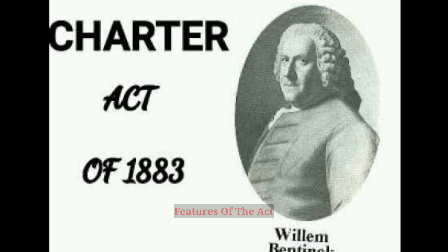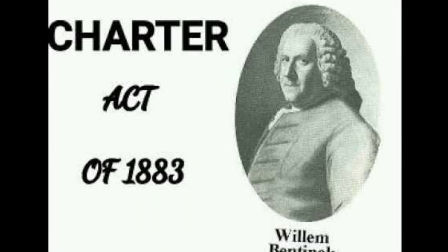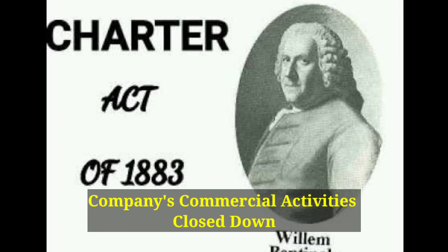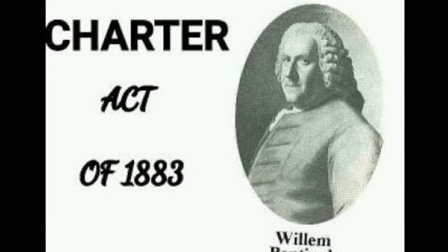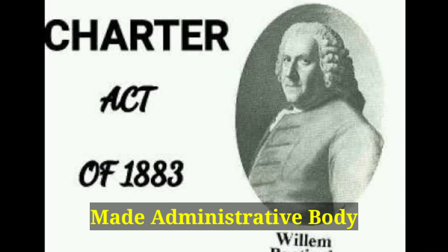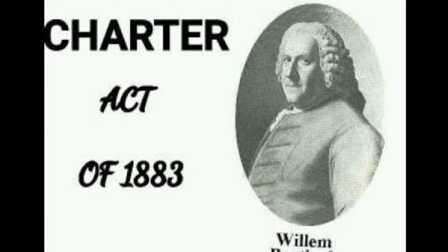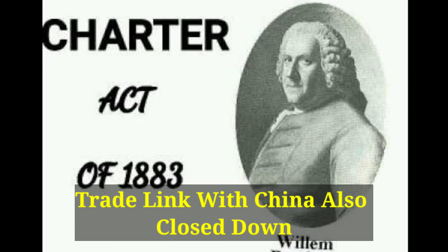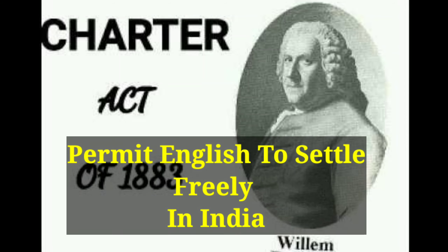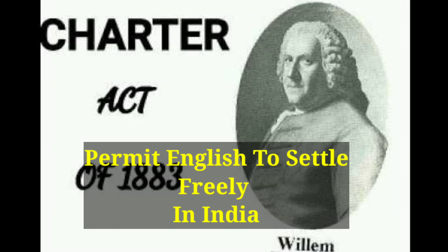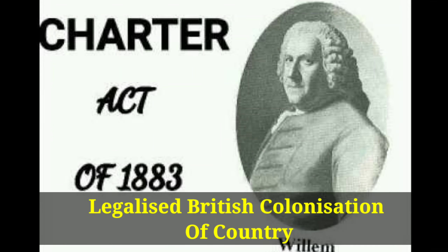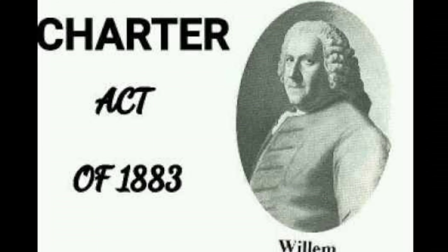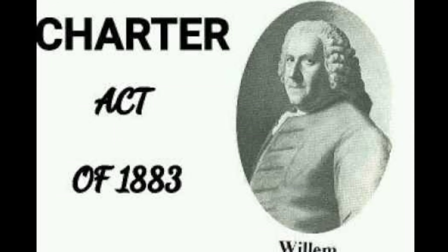The features of the Charter Act of 1833 are: the company's commercial activities were closed down due to corruption, and it was made into an administrative body for British India's possessions. The company's trade links with China were also closed down. This act permitted the English to settle freely in India and legalized British colonization of the country. The company still possessed Indian territory but held it in trust for His Majesty.